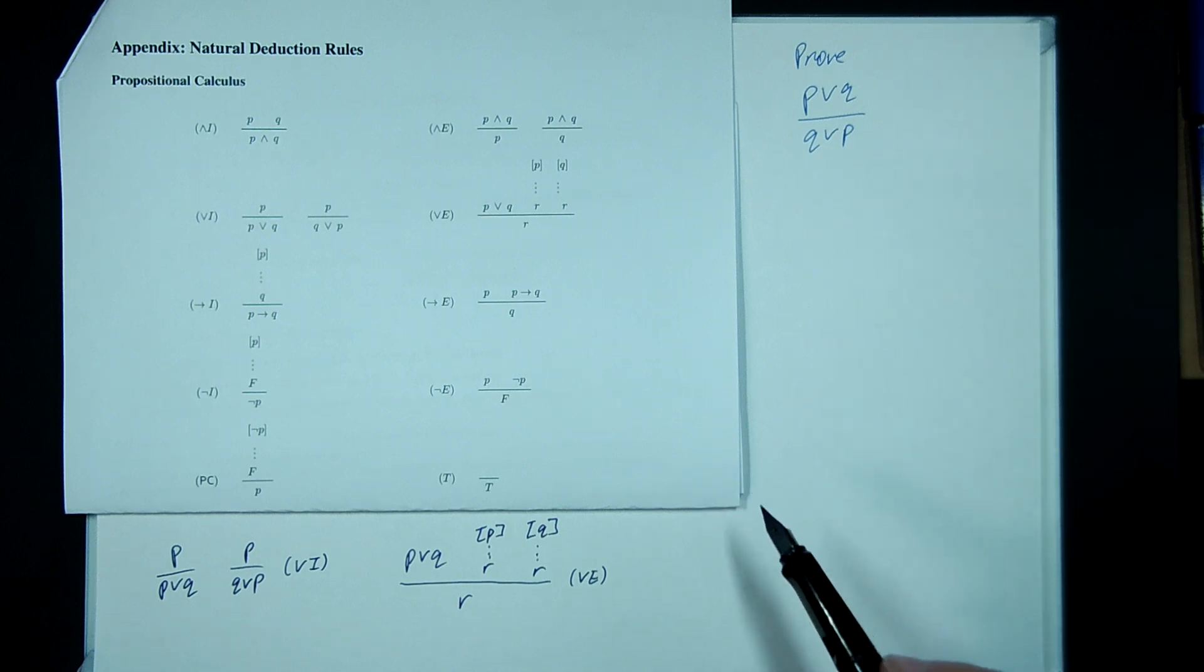Okay, now I want to talk about the OR rules. So we have OR introduction. What that means is if you know that P is true, then P or anything is true, in either order.